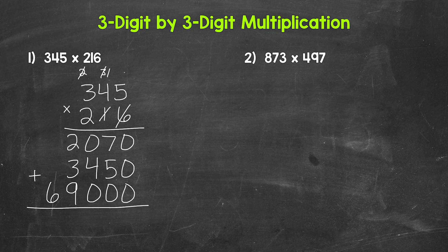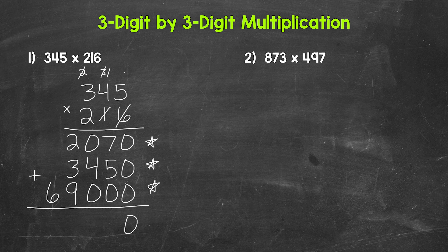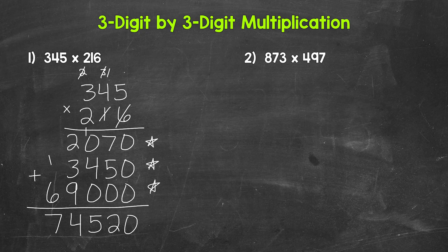Let's recap: 345 times 6 gave us 2,070. 345 times 10 gave us 3,450. And 345 times 200 gave us 69,000. So now we add all of those for our final answer. Starting with the ones place: zero plus zero plus zero gives us zero. Then we have seven plus five, which is 12 plus zero, still 12. Carry the one. Then one plus zero plus four plus zero is five. Then two plus three plus nine is 14. Carry the one. And then one plus six is seven. So we end up with 74,520.